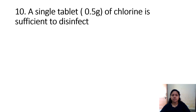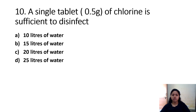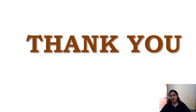A single tablet of chlorine is sufficient to disinfect — Option A: 10 liters of water. Option B: 15 liters of water. Option C: 20 liters of water. Option D: 25 liters of water. Correct answer is Option C — 20 liters of water. A 0.5 gram single tablet of chlorine is sufficient to disinfect 20 liters of water.